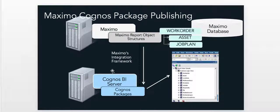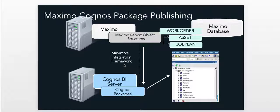Looking at this in a little more detail, what we're actually doing within the MIF is using Maximo report object structures — we often call these ROS, standing for report object structures. An object structure at a top level is a collection of database objects that we join together via Max relationships. In this case, I'm showing an example of a work order parent object, asset and job plan child objects, which are joined together. That collection of database objects is then published as my Cognos package through the integration framework. We transform the content and publish a Cognos CPF file that can be opened directly in Cognos Framework Manager, or users can directly begin utilizing that content as their data source for reports and dashboards.